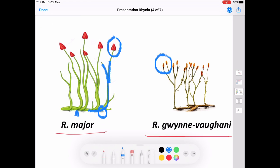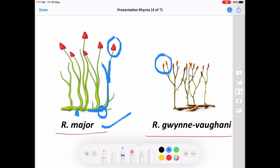This is all about the morphological features of the plant Rhynia. Rhynia is having only two species: Rhynia major and Rhynia gwynne-vaughanii. Now, coming on to the internal structure, both the rhizome and the aerial shoot have similar internal structure.